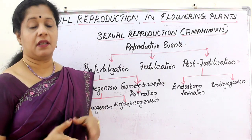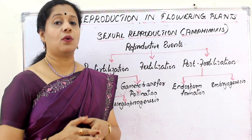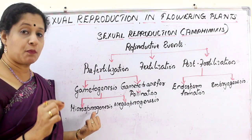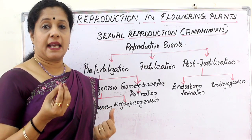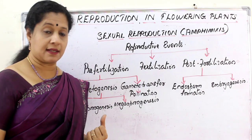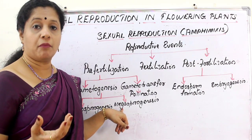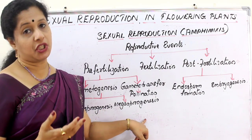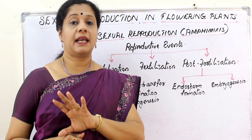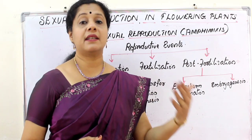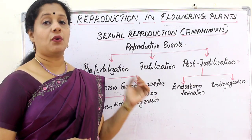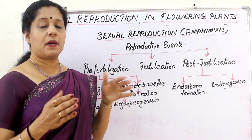Once the gametes are formed, there are two types: male and female. In the case of plants, we call the formation of male gametes microsporogenesis, because pollen grains contain the male gametes and pollen grains are called microspores. Formation of microspores is microsporogenesis. Similarly, female gametes are formed by a process called megasporogenesis. After formation of gametes, they have to be transported — the male gametes should reach the female gametes. This gamete transfer, in plants, is called pollination.